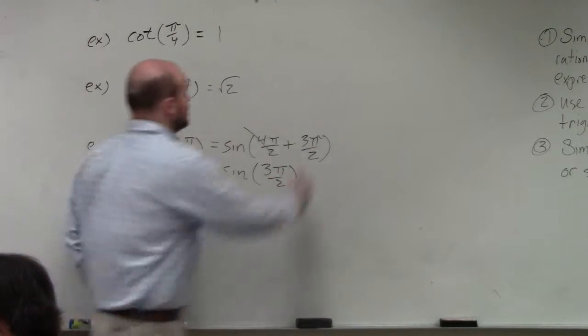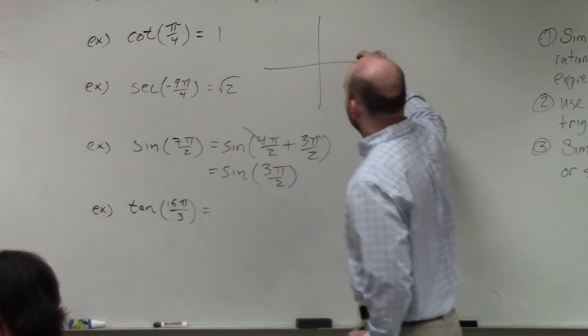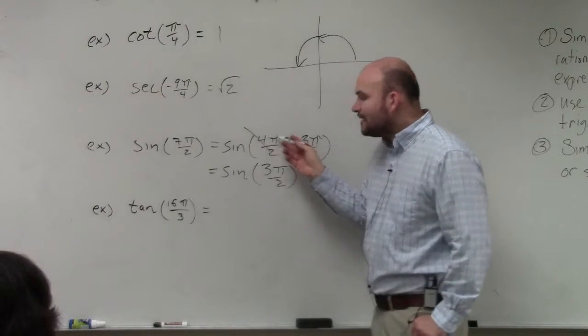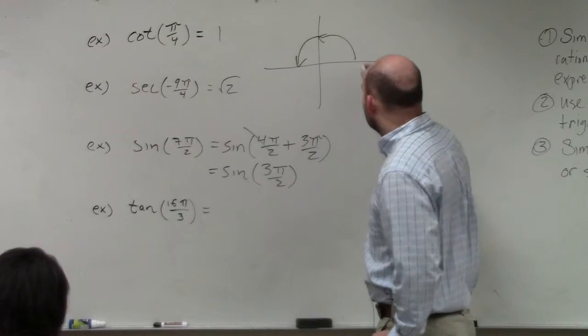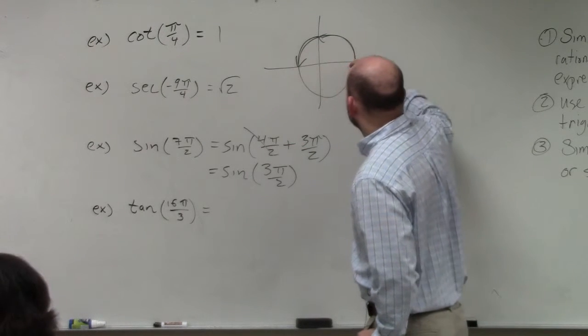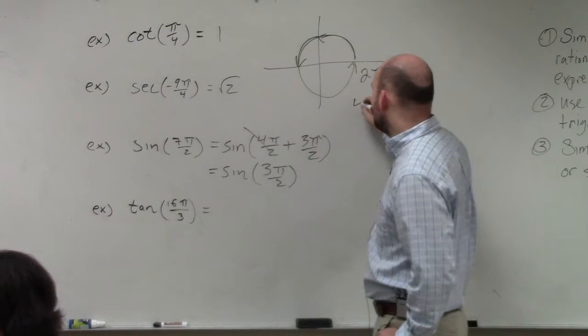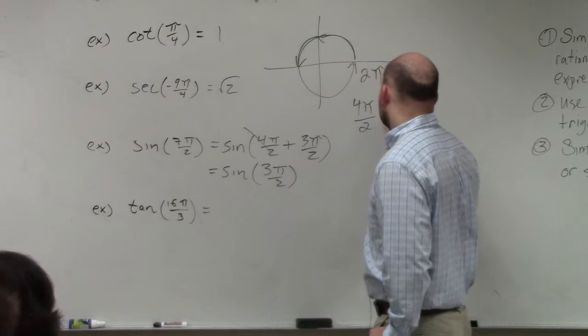Well, on your unit circle, here's pi over 2. 4 pi over 2. Remember, all the way around, guys, is equal to what? 2 pi. What is 4 pi over 2 equal to? 2 pi.